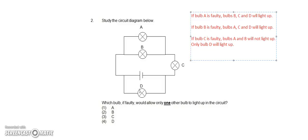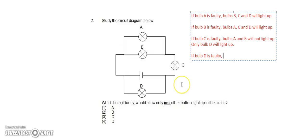Let's take a look at the last one. What happens if bulb D is faulty? Since bulb D is right at the bottom of the circuit, if bulb D is faulty it will not affect any of the other bulbs. Current will still be able to pass through from the top of the circuit. So if bulb D is faulty, bulbs A, B and C will be able to light up.